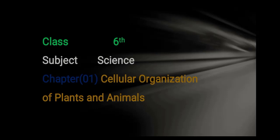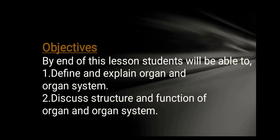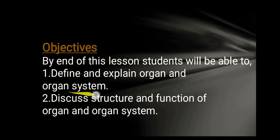Class: Science. Chapter No. 1: Cellular Organization of Plants and Animals. Lecture number seven. The objective of this lesson: by the end of the lesson, the student will be able to define and explain organ and organ system, and discuss the structure and the function of the organ and organ system.